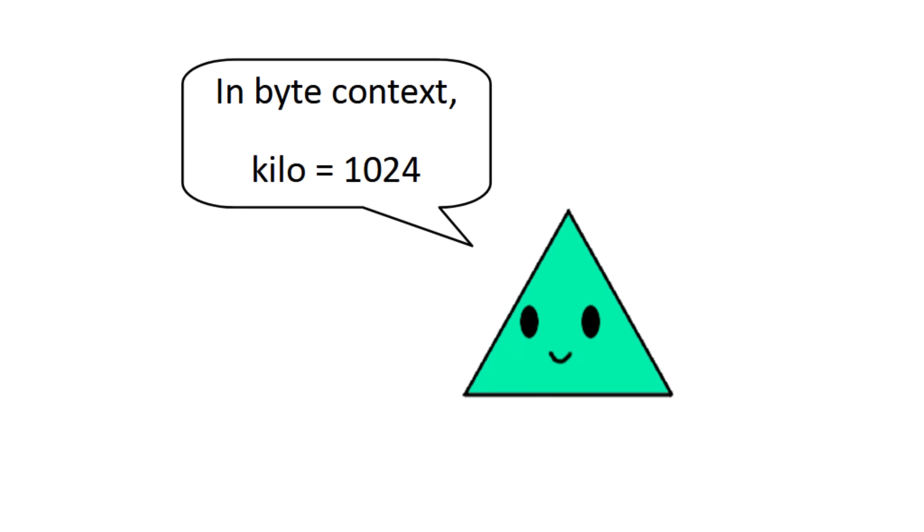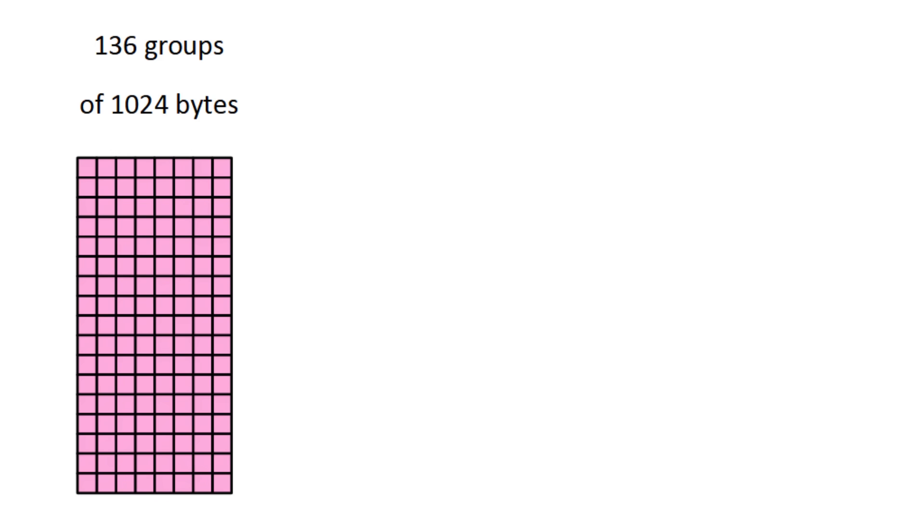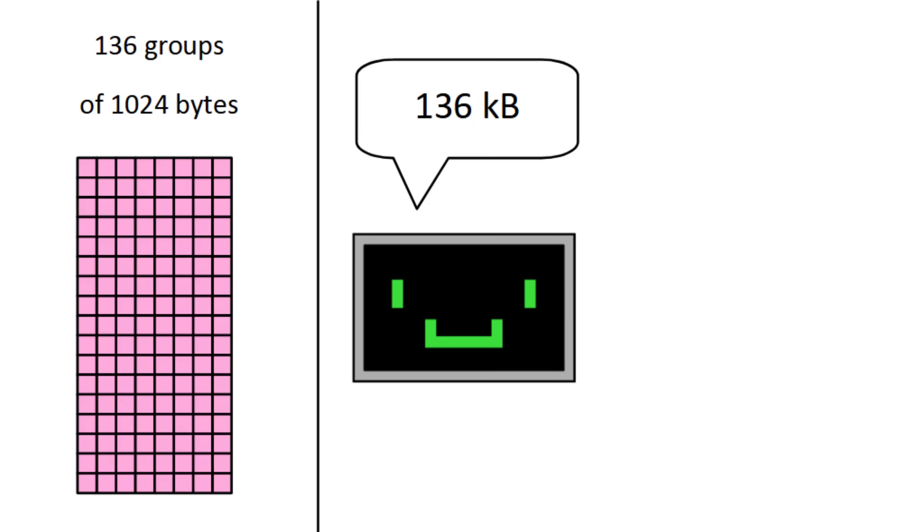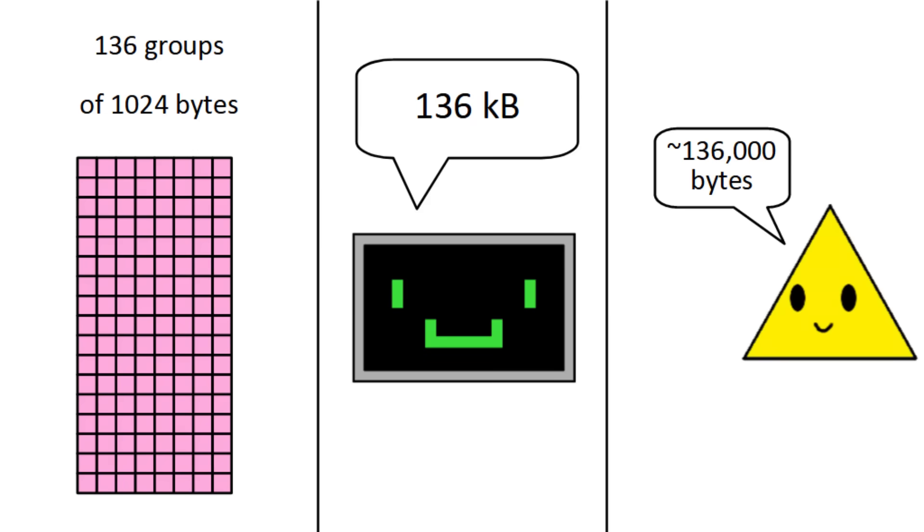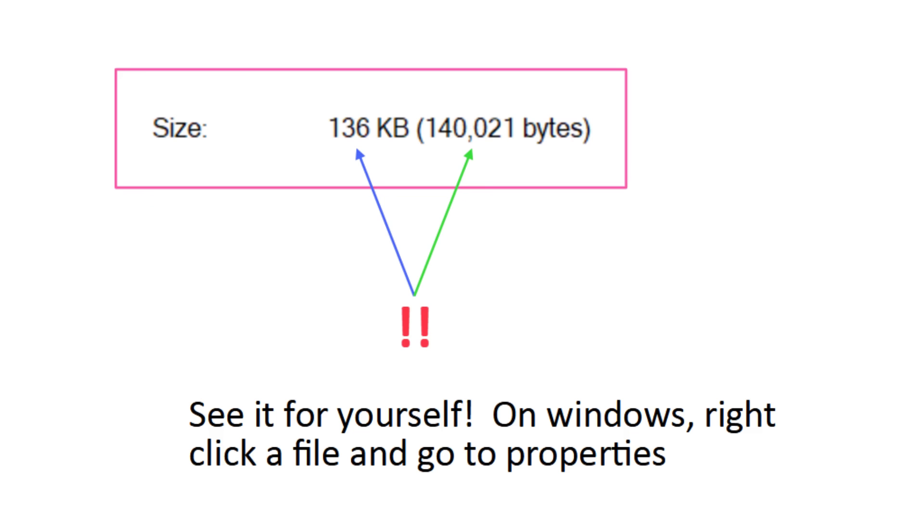So if a file has 136 groups of 1024 bytes, the computer can just say it's 136 kilobytes, and you can know that that's approximately 136,000 bytes, even though it's technically 140,000 bytes.